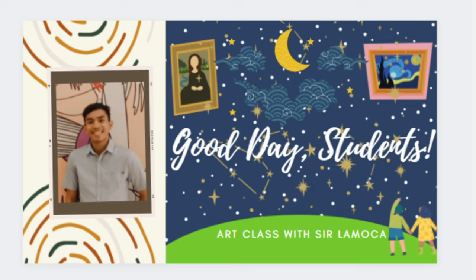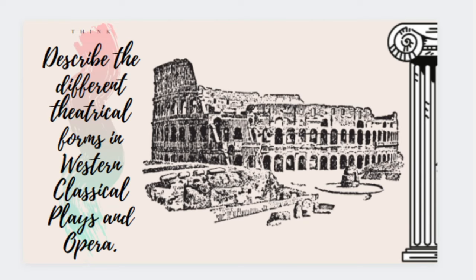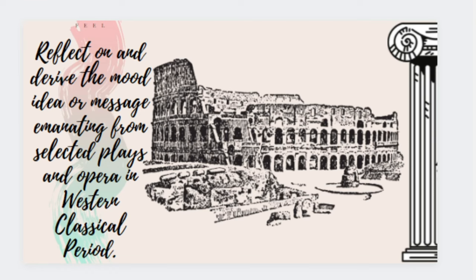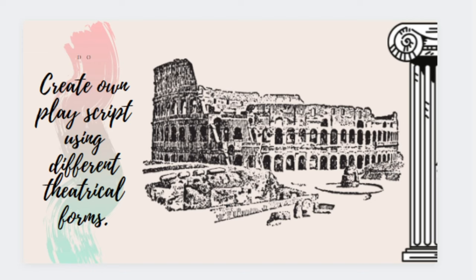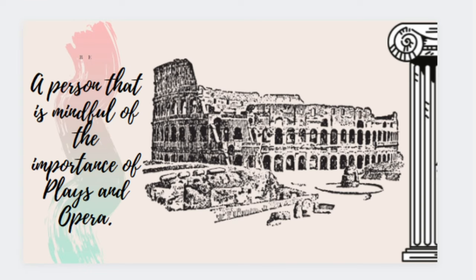Here are our objectives for today's lesson. First, describe the different theatrical forms in Western Classical plays and operas. Second, compare the characteristics of Western Classical plays and operas. Third, reflect on and derive the mood, idea, or message emanating from selected plays and operas in Western Classical periods. Create your own play script using different theatrical forms. Show the influences of Western Classical plays on Philippine plays. Recognize the uniqueness of each theatrical form. And lastly, be a person that is mindful of the importance of plays and operas.